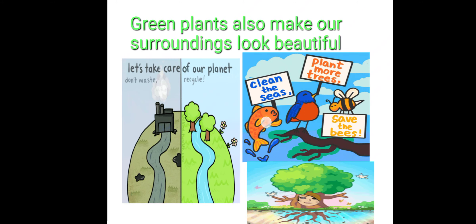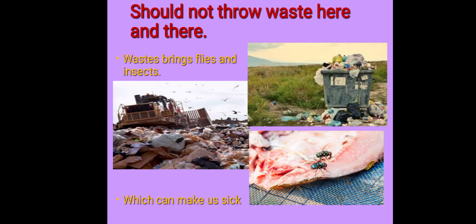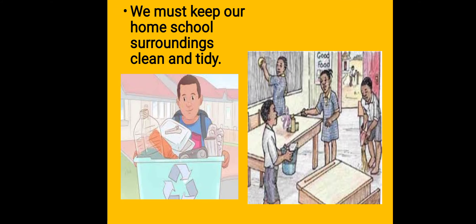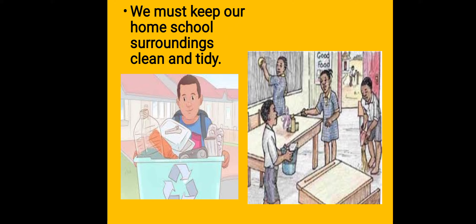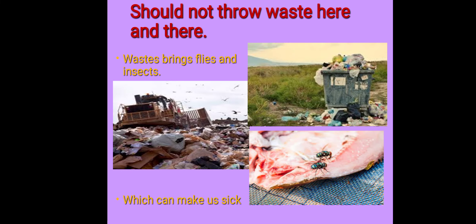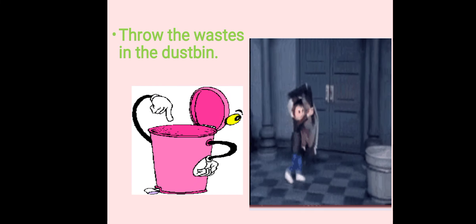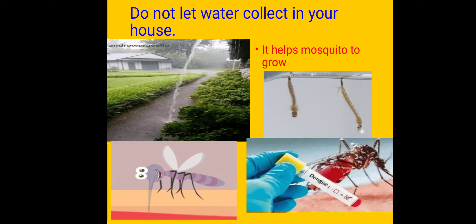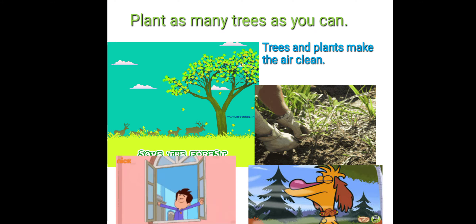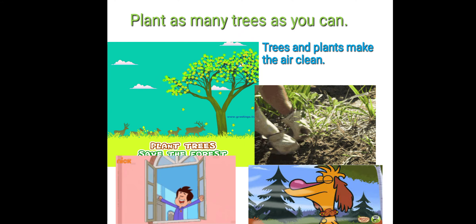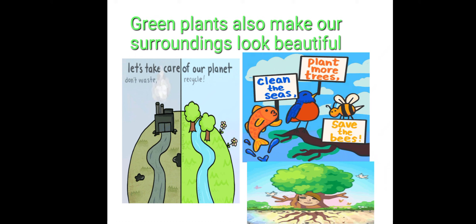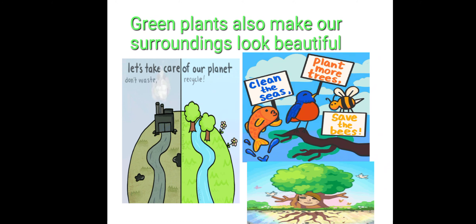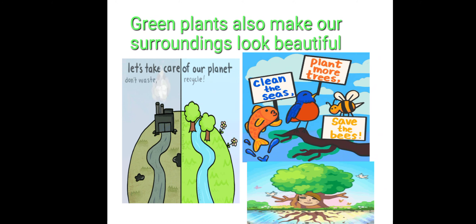In today's lesson we have learnt that we must keep our surroundings clean. We must keep our home, school, and surroundings clean and tidy, should not throw waste here and there, throw the waste in the dustbin, do not let water collect in your house, and plant as many trees as you can, because green plants make our surroundings look beautiful.